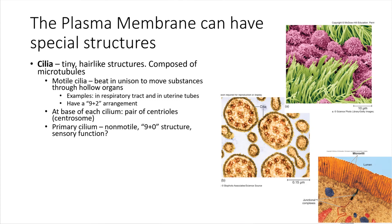Microtubules are what allow cilia to move. This picture is showing a cross-section through some cilia — like looking at a tree stump. Inside the cilia we have these arrangements of microtubules called a nine plus two arrangement: nine pairs around the outside and then two in the middle. This arrangement allows the cilia to bend. The microtubules in the middle can sort of grip and ratchet against the surrounding microtubules, sliding back and forth, which causes the cilia as a whole to bend left or right.